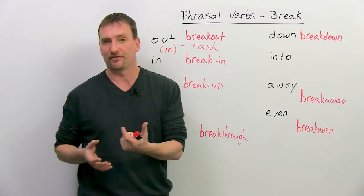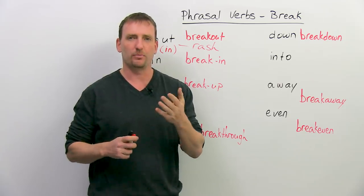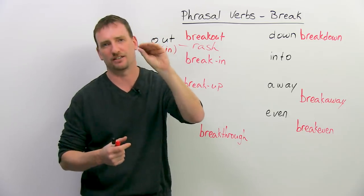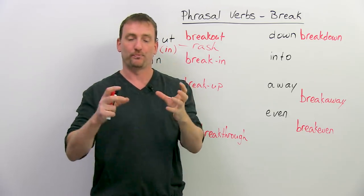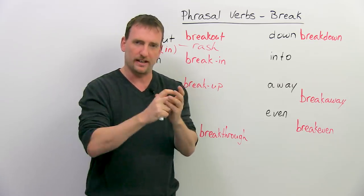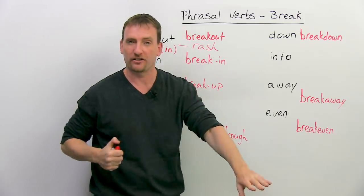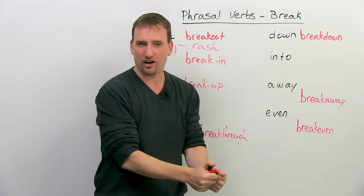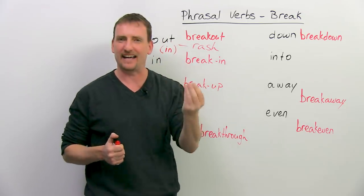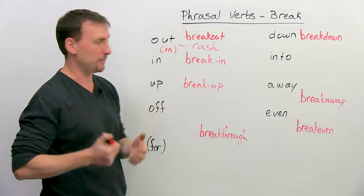A very common thing you need to break in is a baseball glove. When you buy a new one, it's very stiff — you can't catch the ball because you can't close it. So you take some oil, put it inside, place a baseball in it, close it tight, tie it with rope, put it under your bed and sleep on it for a few days. After a few days, it's nice and soft and flexible, and you can catch the ball.